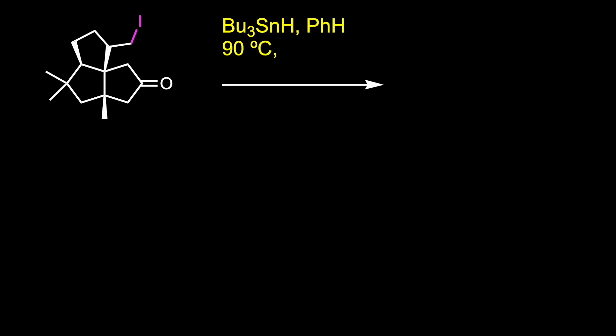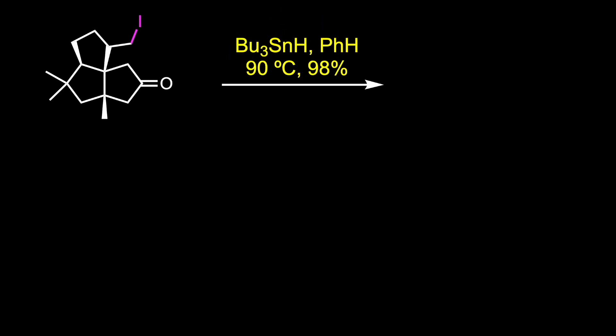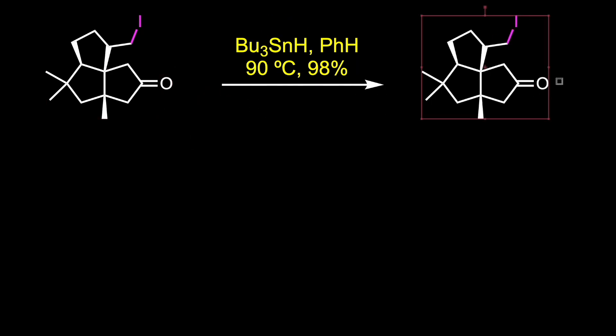Reduction of the carbon-iodine bond with tributyltin hydride gave the corresponding ketone in 98% yield.